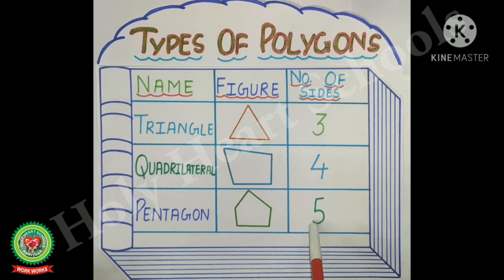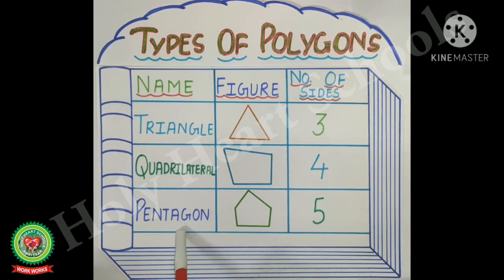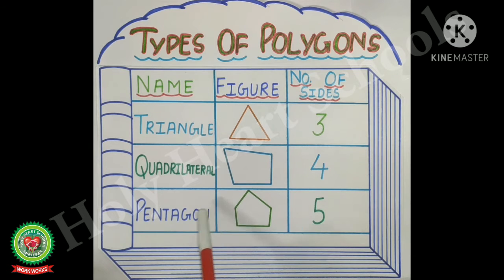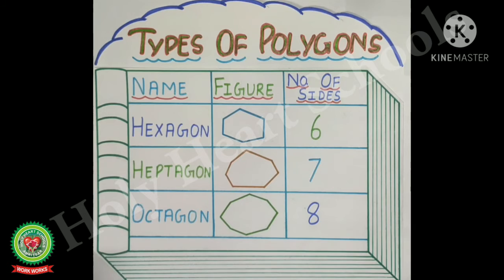The polygon which has five sides is called a pentagon. The figure given has one, two, three, four, five sides. So it is called a pentagon.